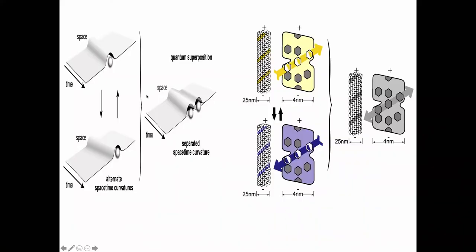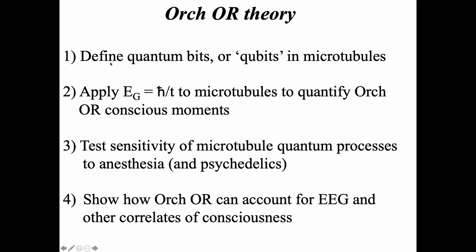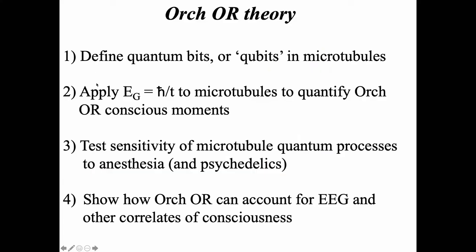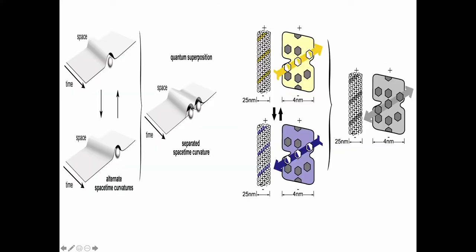It turns out that the arrangement of these aromatic groups is very similar to aromatic groups in tubulin. So basically what we wanted to do was take the space-time qubit Roger described — where a position of a particle is equated to its curvature in space-time — and a superposition would be a separation of those curvatures. That doesn't lead to multiple worlds because of objective reduction; at least we don't think so. We wanted to equate that to a qubit — a quantum bit in tubulin.